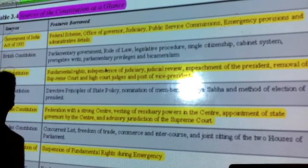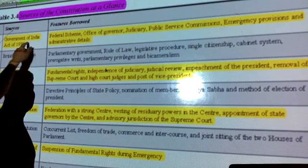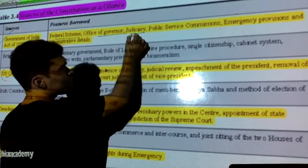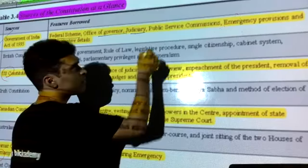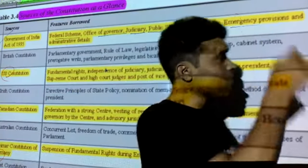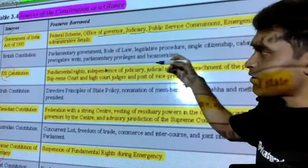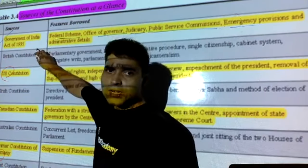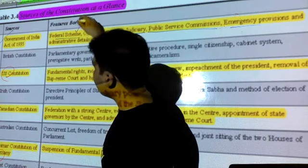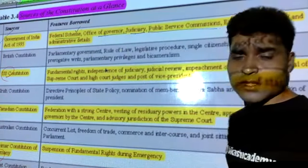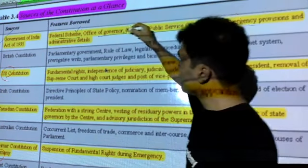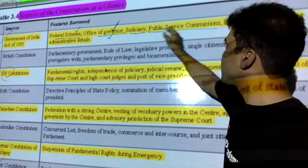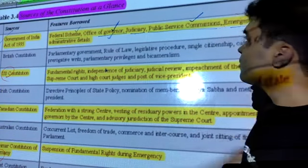From the Government of India Act 1935, we borrowed the federal scheme, the office of the Governor, and provisions related to the judiciary. Emergency provisions were also drawn from here, though some were later modified. Very importantly, the Public Service Commission concept also comes from the Government of India Act 1935.